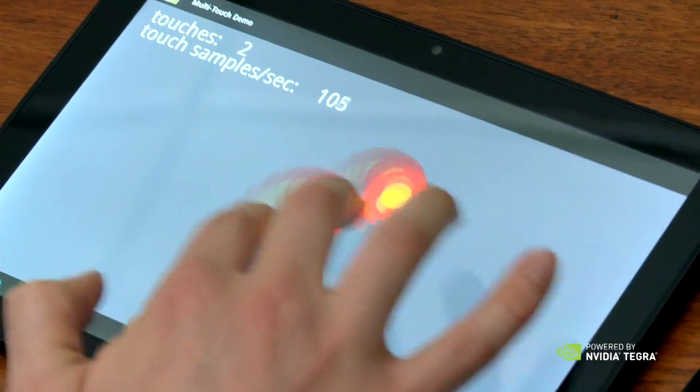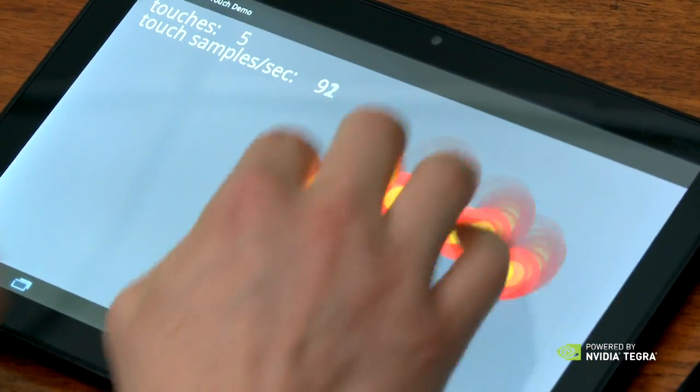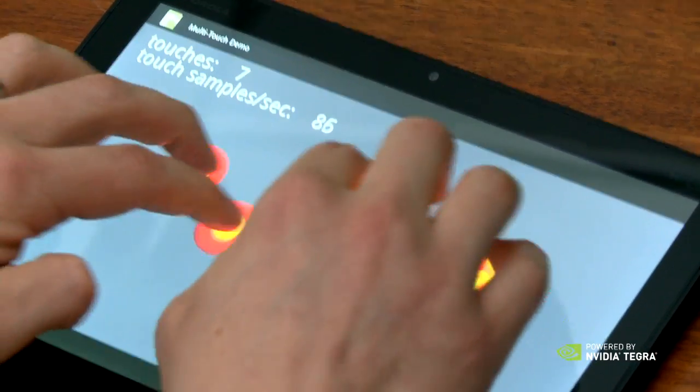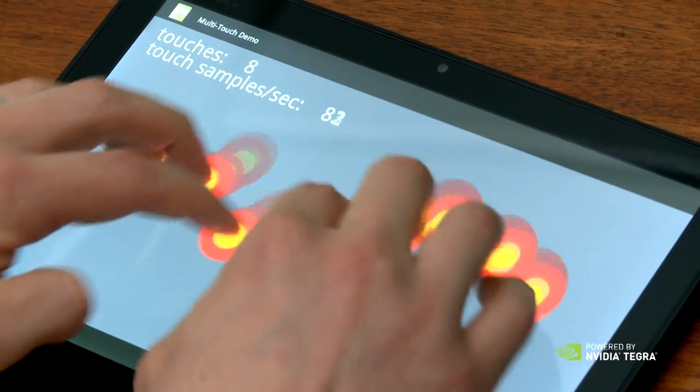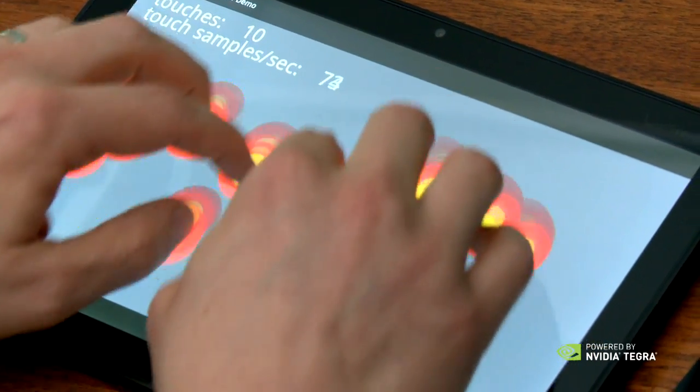As you can see, I'm adding more touches on this first Xoom 1 here. The number of touch samples per second recorded starts to go down, and this will eventually run into about 60 to 70 touch samples per second when we're doing 10 fingers.